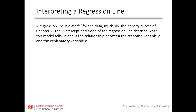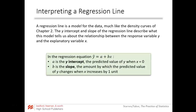Let's interpret the regression line. The regression line is a model for our data, just like our density curves were models. The y-intercept and the slope describe what this model tells us about the relationship between the response and explanatory variables. This is where context becomes really important. Y-hat equals a plus bx. Note this is different from algebra, where we used b for the y-intercept — in stats we use a for the y-intercept and b for the slope.